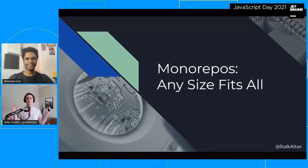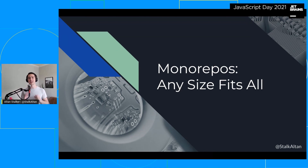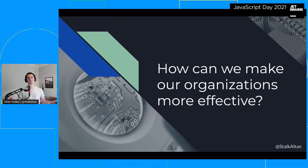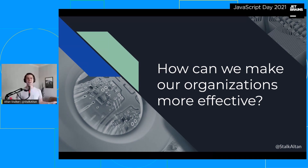Today we're going to be talking about monorepos — any size of monorepo fits all organizations. This is a not-so-obvious way to make your teams or organizations more effective. There's already a ton of content out there about choosing the correct framework for your use case, the best editor plugins, and even ways to name your individual files. What we're interested in is even more high level: what is the best way to organize your repositories?